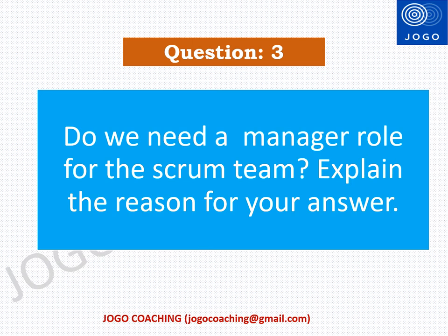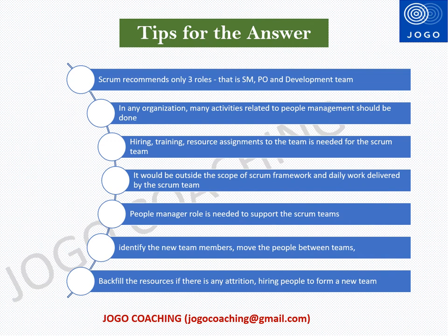Let me give tips to answer the third question: do we need a manager role for the Scrum team? This is one of the important questions asked in a Scrum Master interview. The Scrum framework recommends only three roles — Scrum Master, Product Owner, and Development Team — and does not mention any other roles. However, in any organization, many activities related to people management need to be done to enable Scrum teams, such as hiring, training, and resource assignments. To address these people-related needs, a person in the organization is needed, so a people manager role is needed for Scrum teams — but it would be outside the scope of the Scrum framework and the daily work deliverables of the Scrum teams.